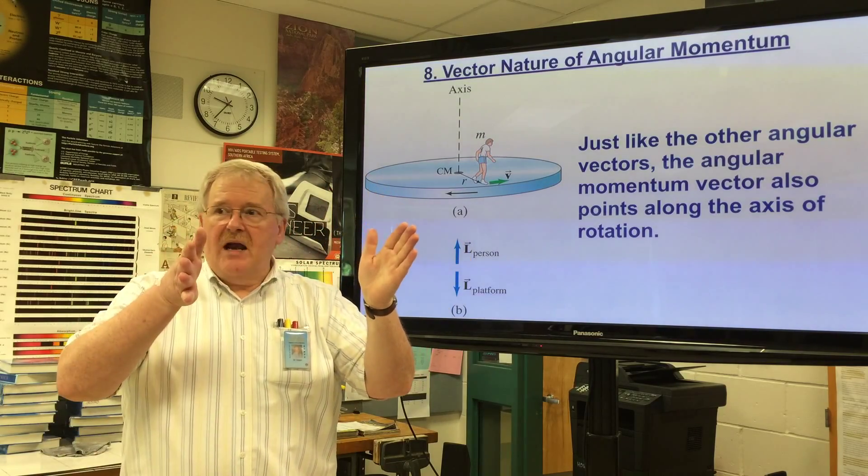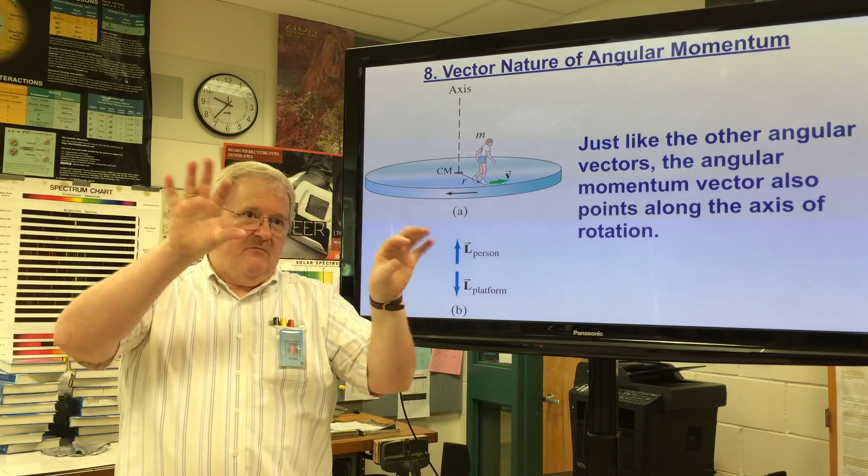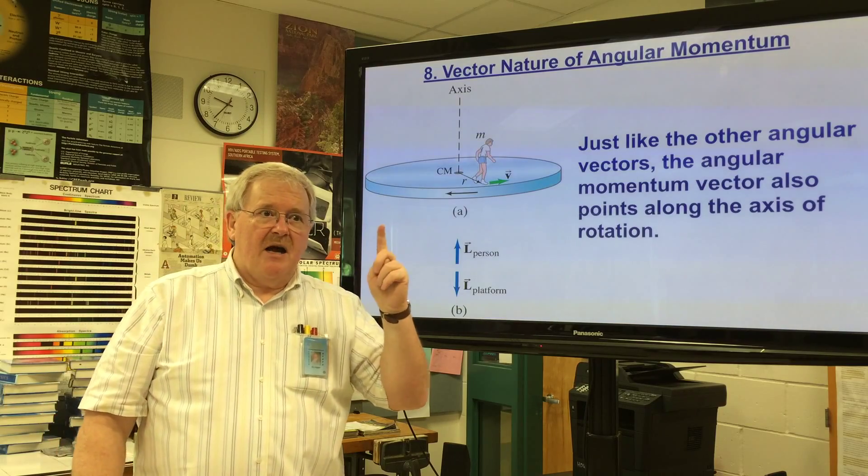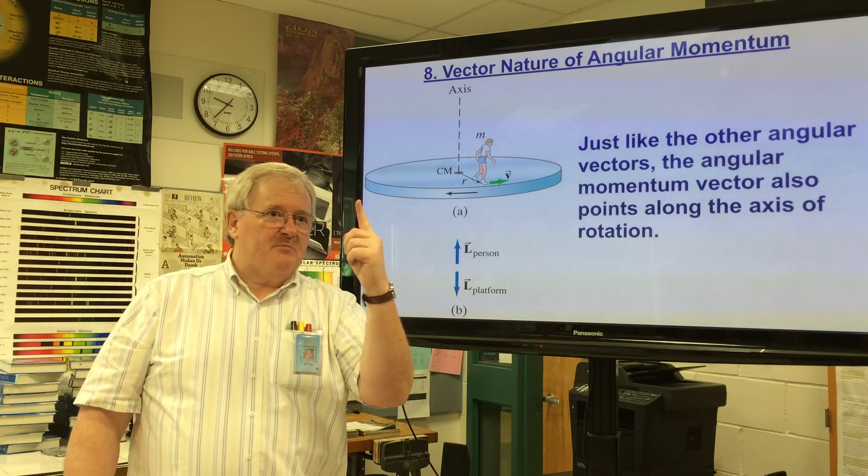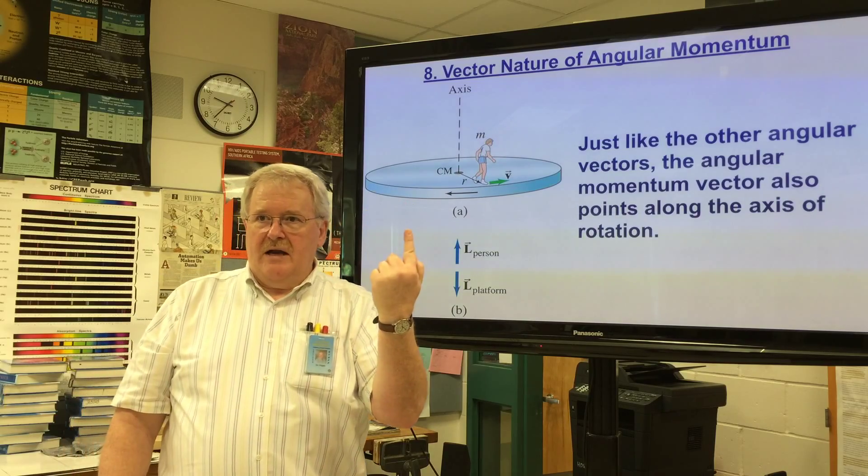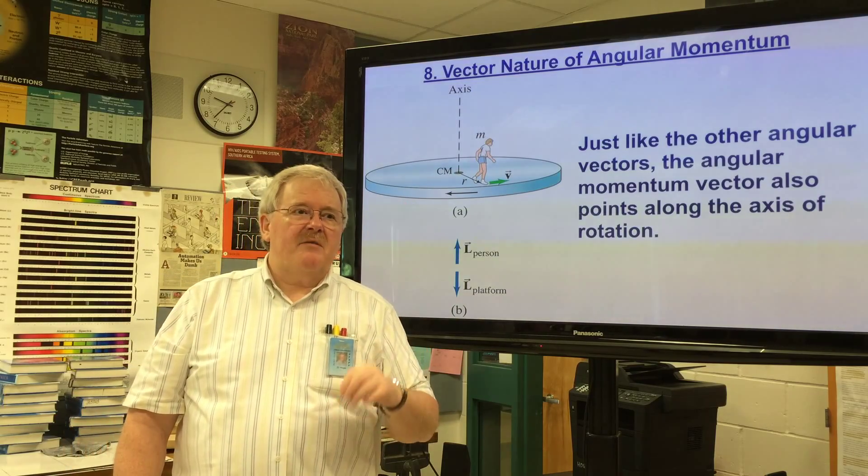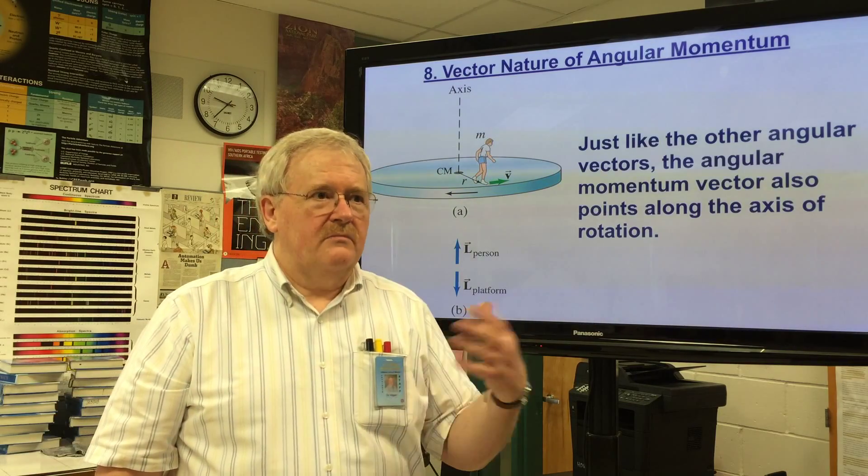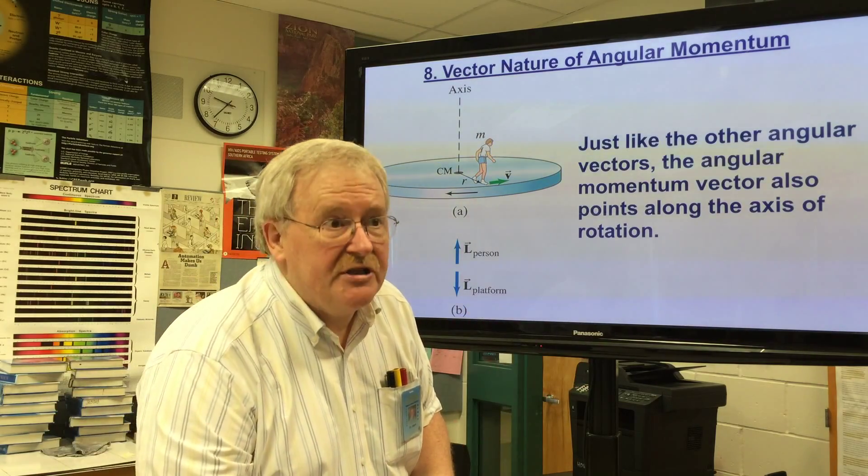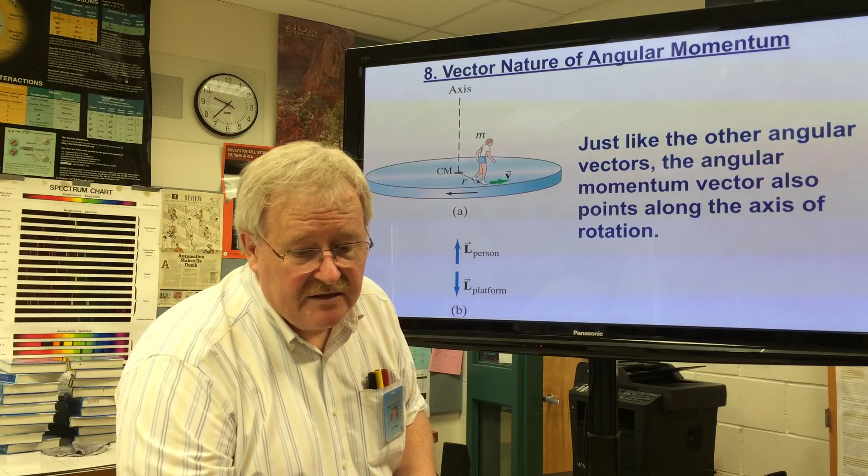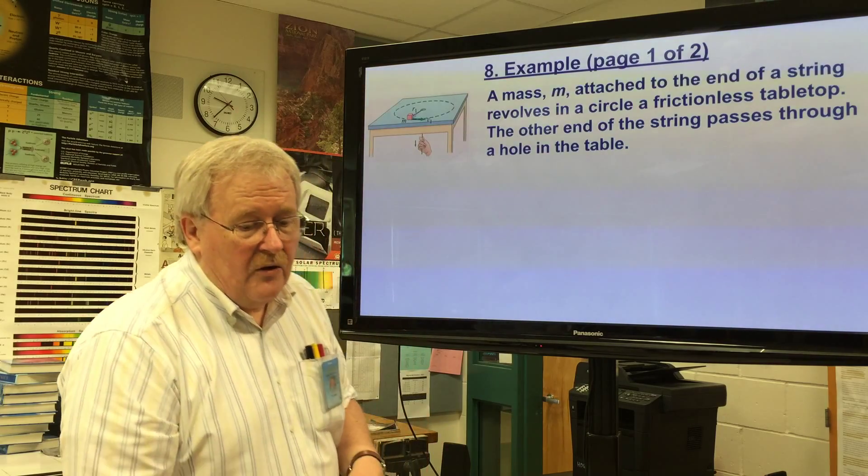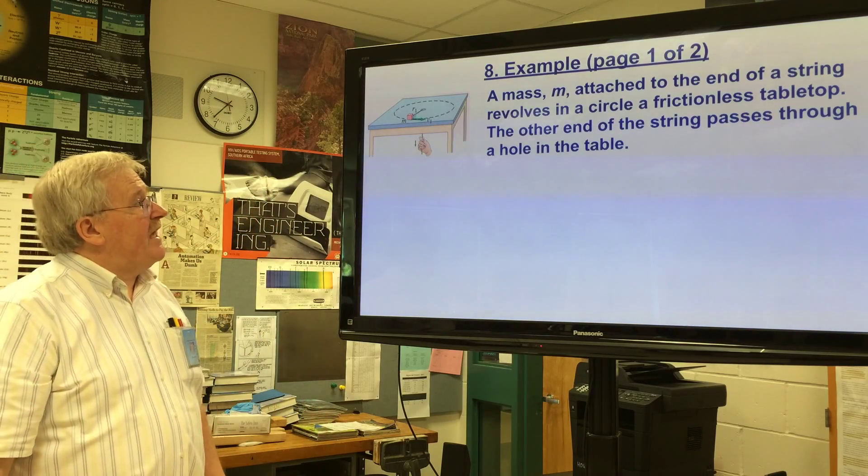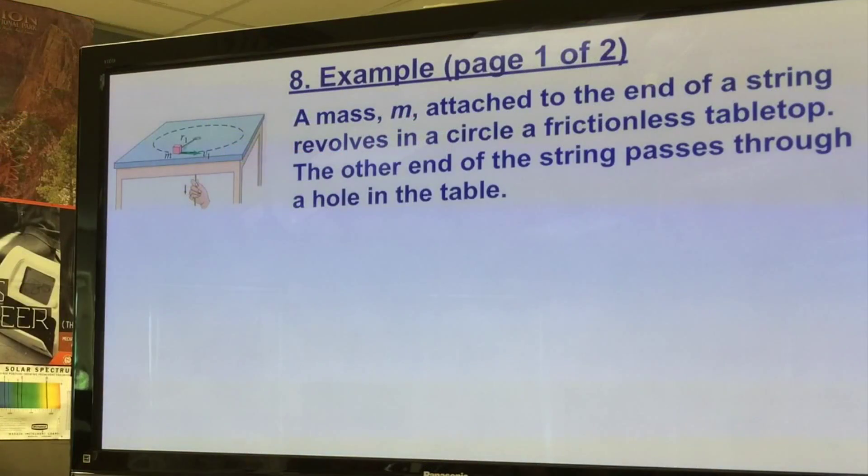It gets a little trickier when you start talking about gyroscopes, because now what you're talking about is having a torque which is trying to push it over, the torque being the force of gravity on the spinning disc, whereas the angular momentum wants to stay up. And so what you end up with is this precession that goes around. We're not going to do that mathematics, it's too difficult for this class. But that's something that you would do in college in first year mechanics.